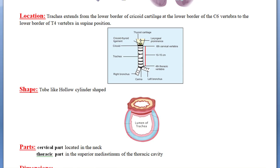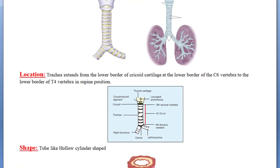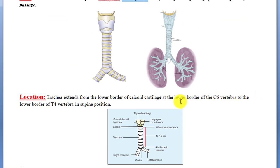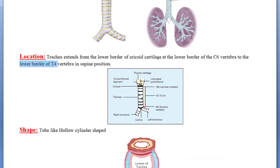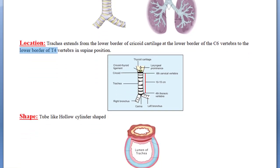What is the location of the trachea in our body? The trachea extends from the lower border of the cricoid cartilage at the C6 vertebra to the lower border of T4 vertebra. In the supine position, the upper end of the trachea is at the lower border of C6, and the lower end is at the lower border of T4 vertebra. This is the topography of the trachea.